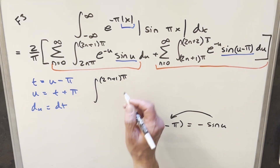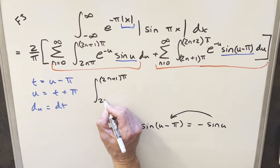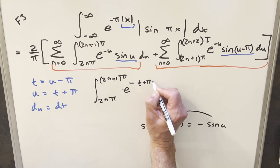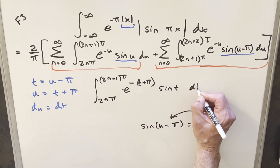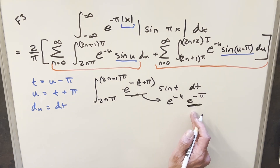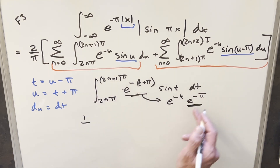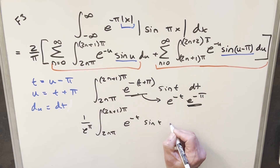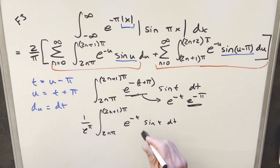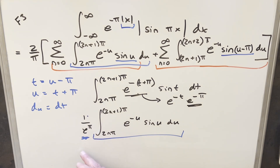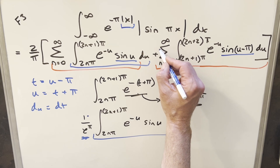The e^(−u) becomes e^(−(t+π)) = e^(−t) · e^(−π), and the sine becomes sine(t) dt. Since e^(−π) is just a constant, I can bring it out front of the integral as 1/e^π. Now doing a variable rename back to u, this integral is exactly the same form as the positive-sine integral, just multiplied by 1/e^π. Since there's no n in this expression, I can bring the 1/e^π factor outside the summation entirely. So adding both groups together gives a factor of (1 + 1/e^π) times the summation.